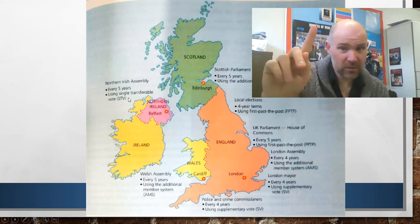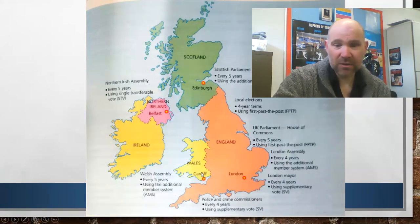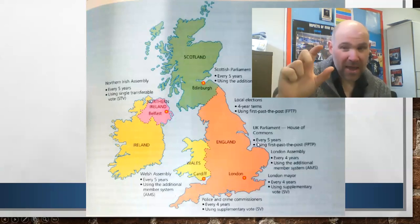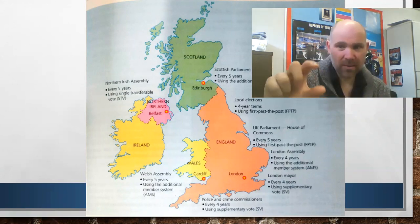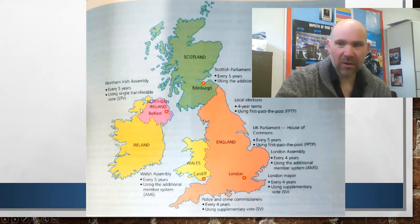STV is only used in one place in the UK, which is in Northern Ireland for the Northern Irish Assembly. AMS is used in the Scottish Parliament, the Welsh Assembly, and the London Assembly. So basically AMS — the Additional Member System — is used for all of the regional assemblies, including London, except Northern Ireland.